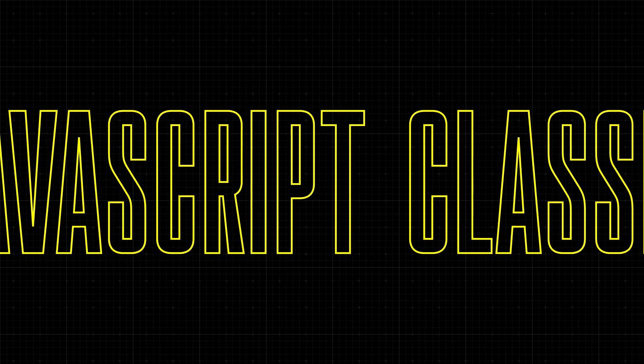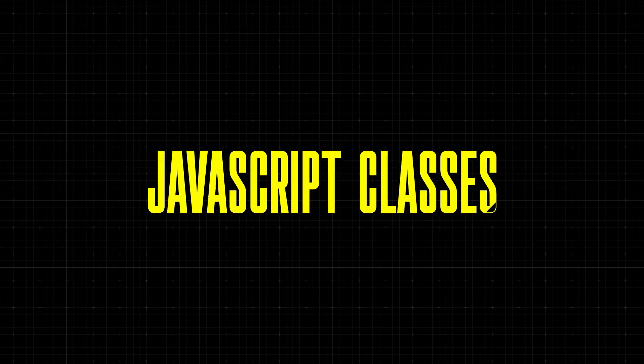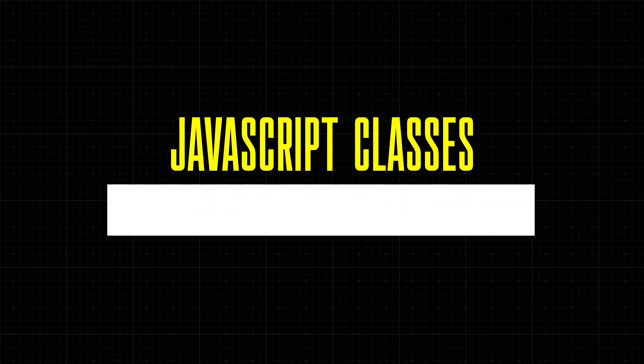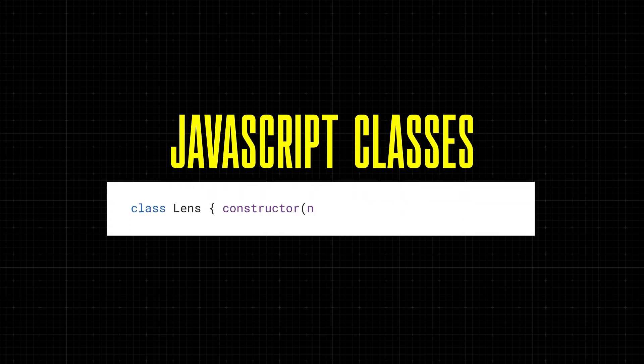Next up, ES6 introduced class syntax to JavaScript. This makes it easier to create objects with their own properties and methods. This is a class declaration. This defines a new class called lens with a constructor that sets a name property when a new lens object is created.